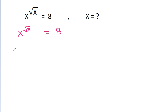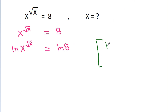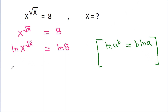If we take ln of both sides, then we get ln of x power root x is equal to ln 8. And we know that ln of a power b is equal to b times ln a. So ln x power root x will be equal to root x times ln x, which equals ln 8.